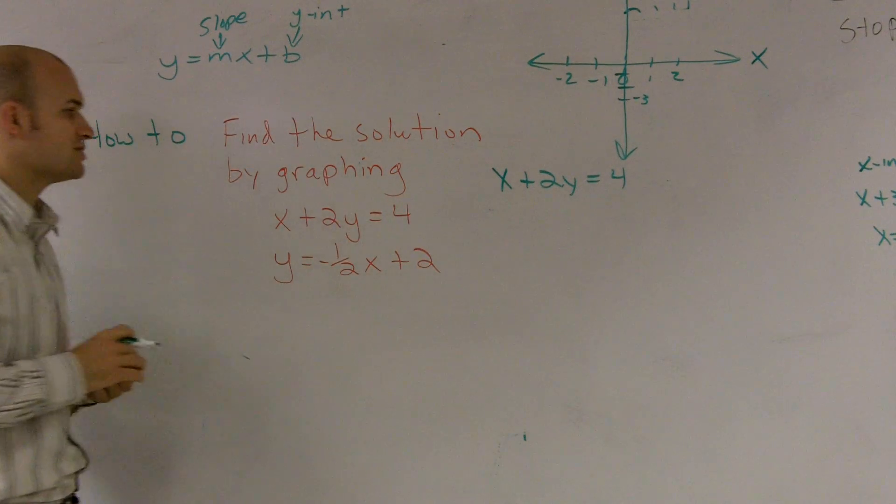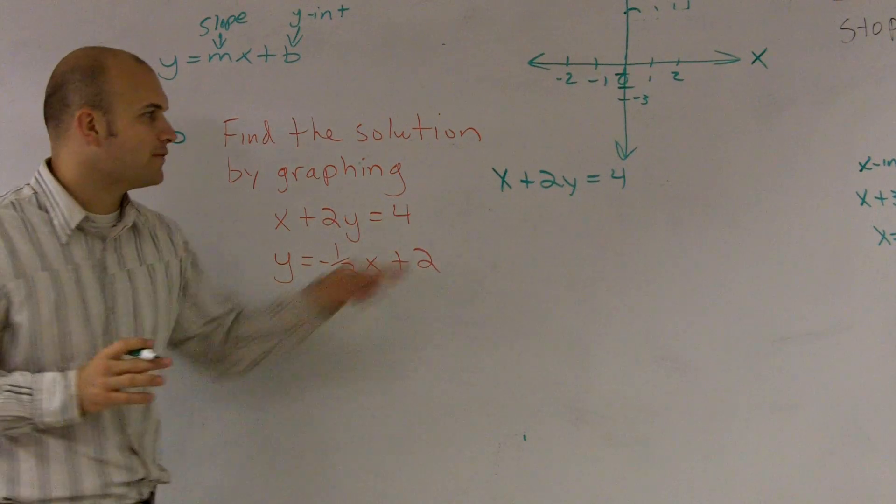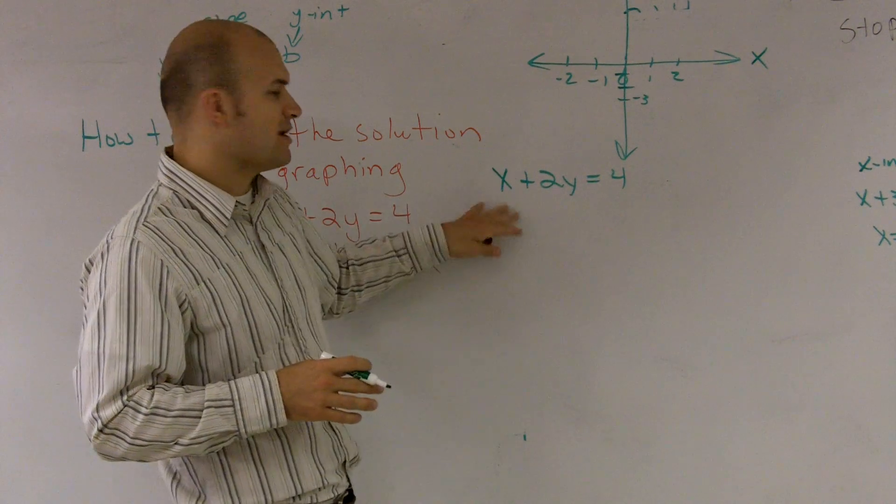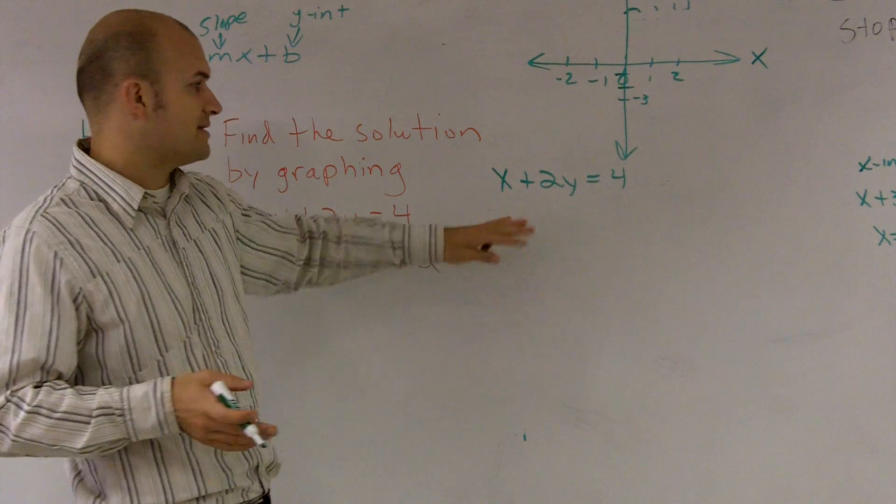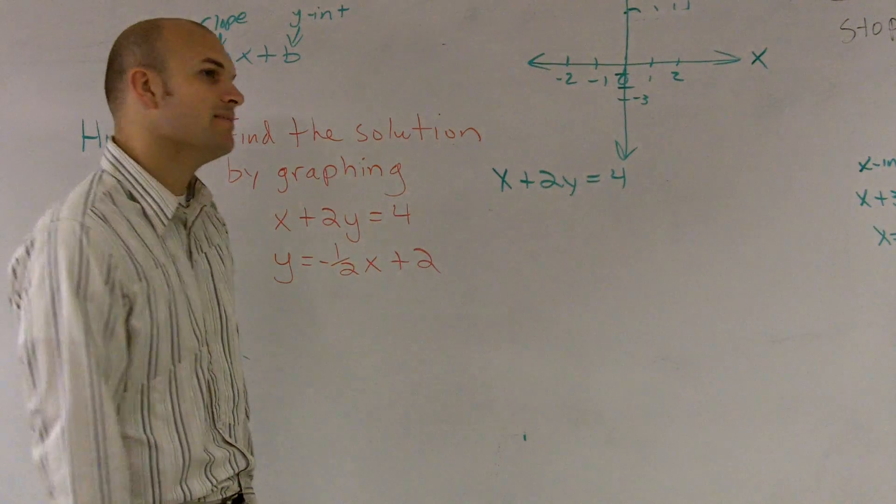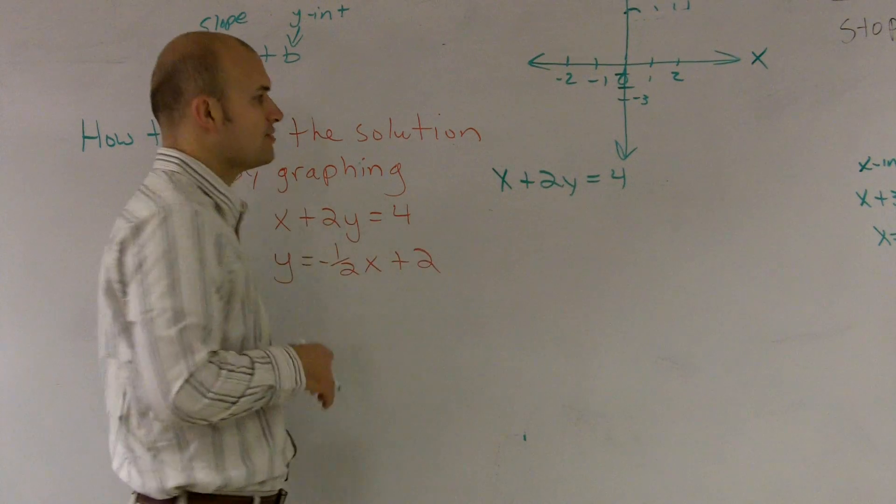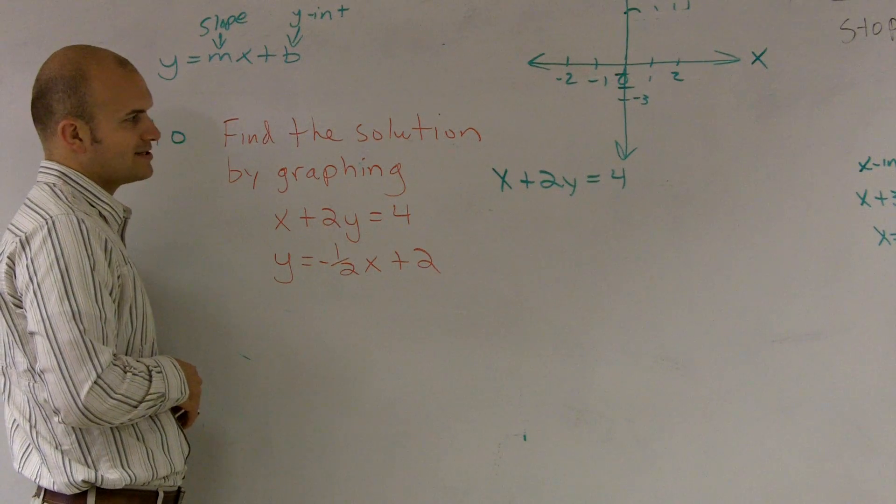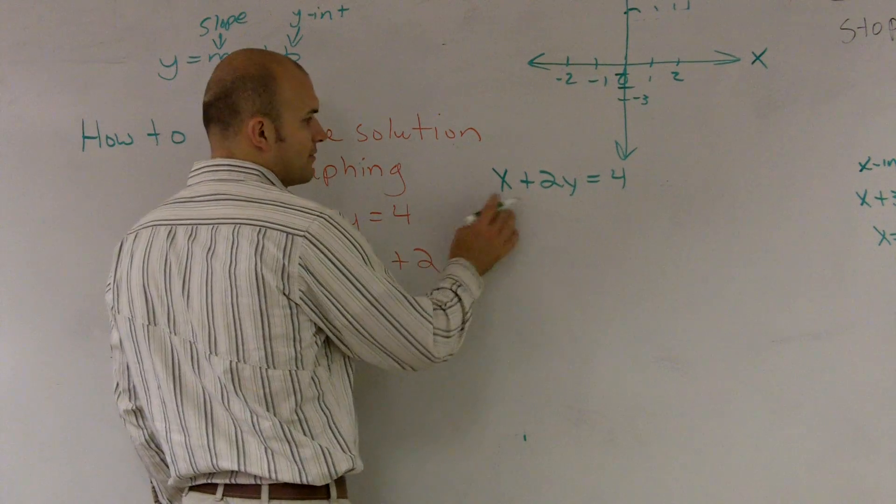Now there's two different ways you can learn how to graph this. You could find the x and y intercepts and plot them, or you could also solve for y, put it in slope intercept form, and then graph it from there. And what I'm going to first do is I'll put it in slope intercept form.